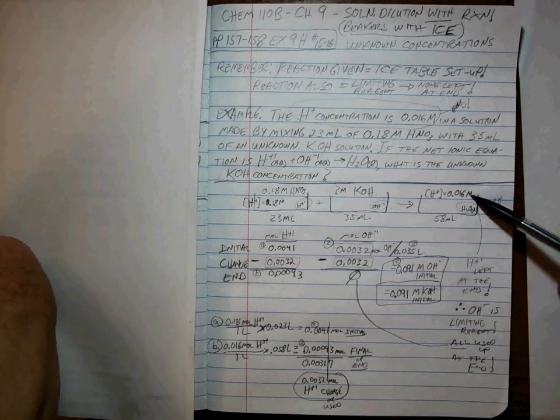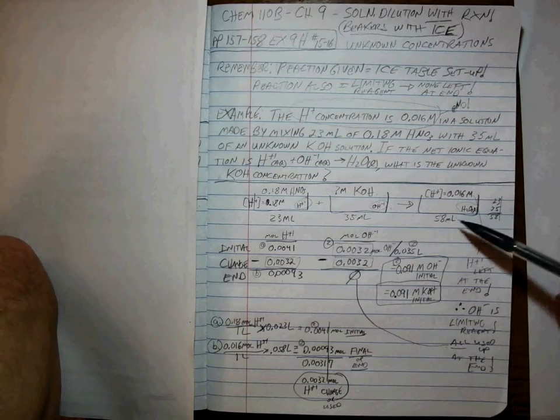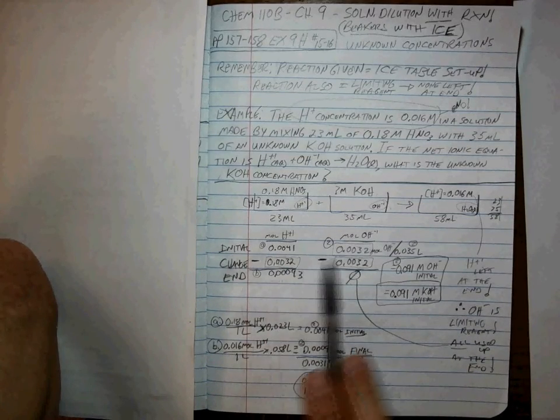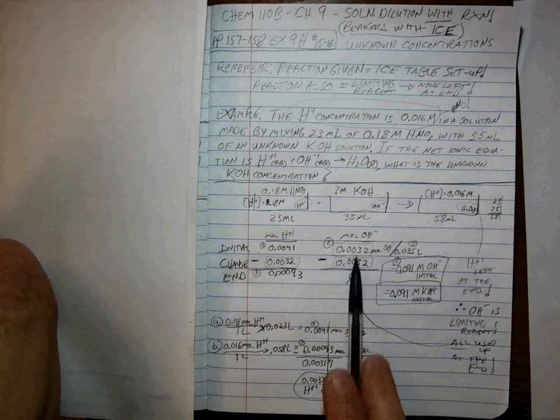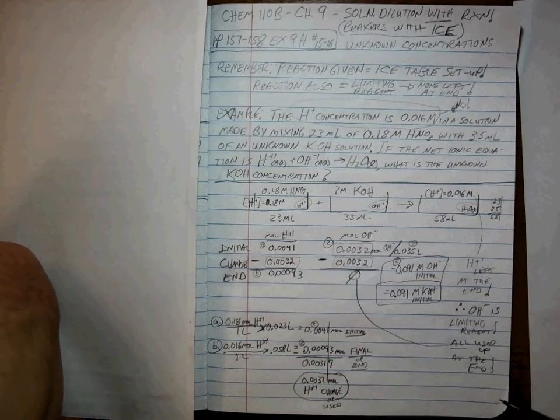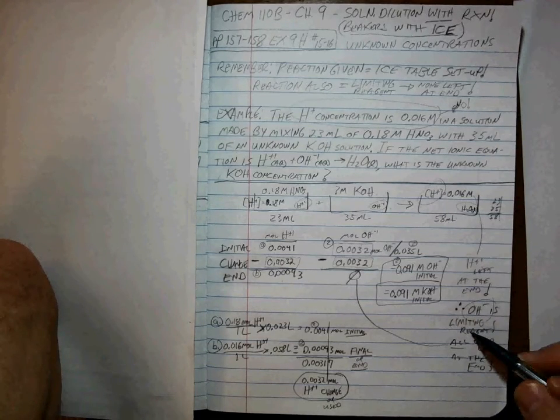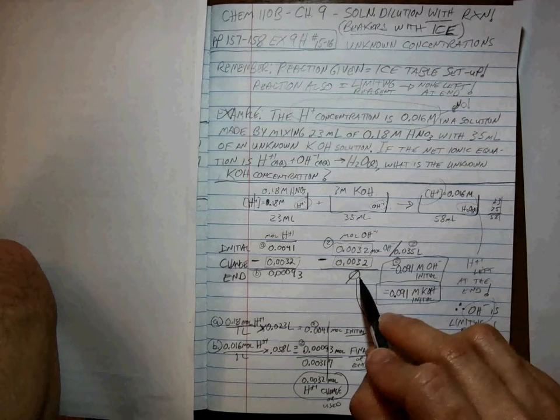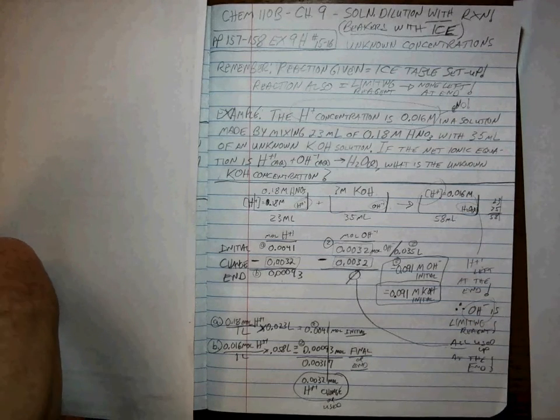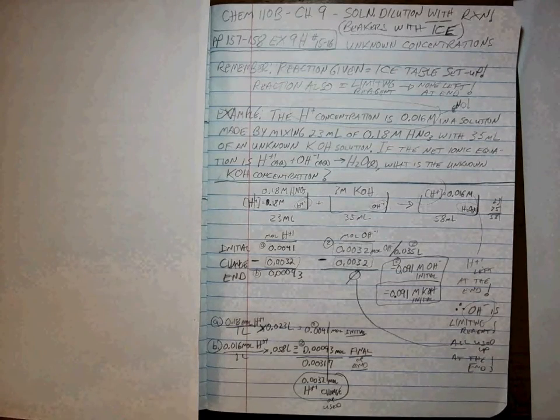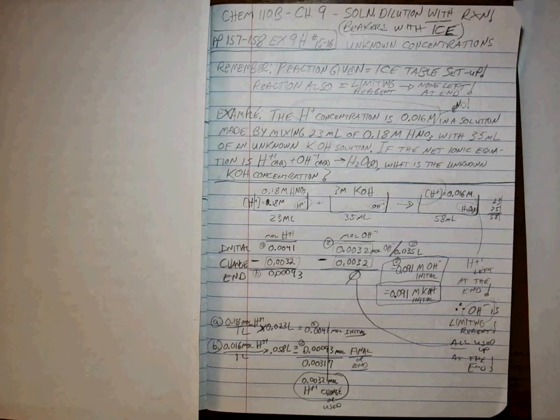Every time you have a concentration in moles per liter times the volume in liters, that gives you moles, and you're going to need to figure that out initial and final. Then the difference between the two, understanding and knowing that if there's H+ left, OH- is limiting, which means that OH gets all used up at the end. This is basically understanding what's going on in solution. You're going to see one of these on quiz 8, you're going to see one of these on the final in Chem 110B. So practice up and be ready. Good luck.